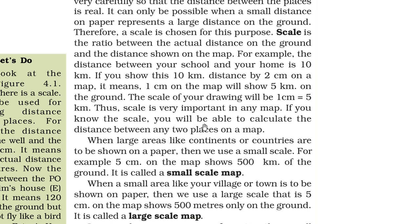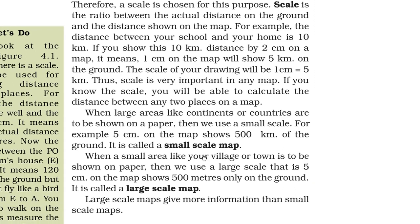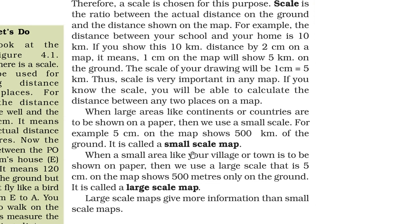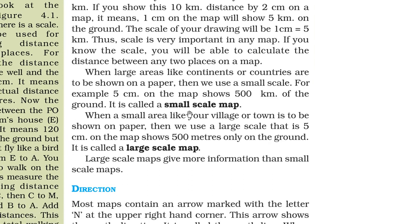Scale is very important in any map. If you know the scale, you can calculate the distance between any two places on a map. When large areas like continents or countries are shown on a map, we use a small scale map — for example, 5 cm on the map can show up to 500 km on the ground. When a small area like a village or town is to be shown, we use a large scale map — say 5 cm on a map may represent only 500 meters on the ground. The large scale map gives us more information than the small scale map.